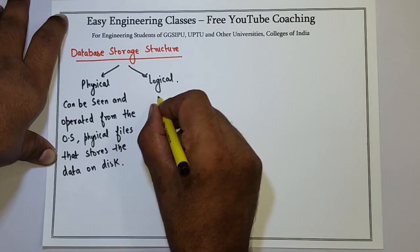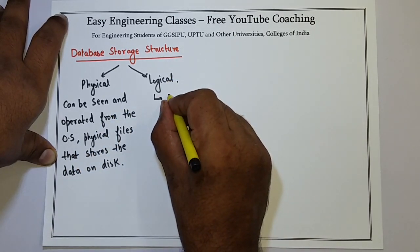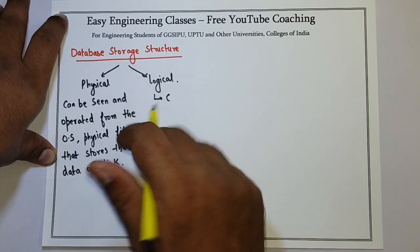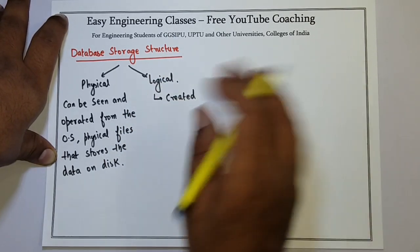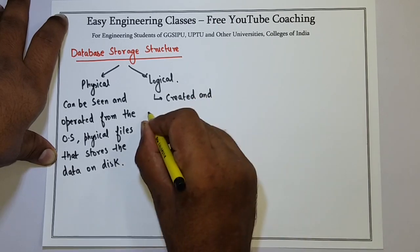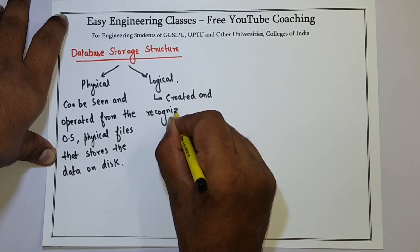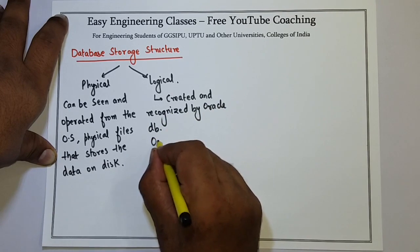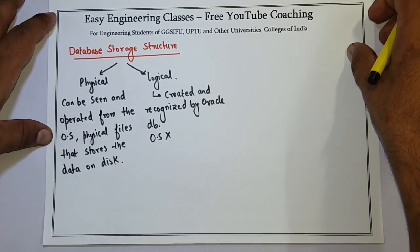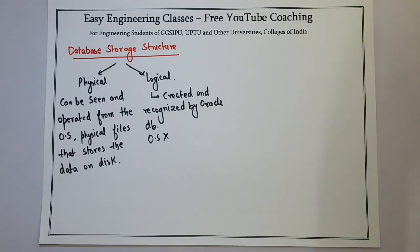The second type of database storage structure is logical. It is created and recognized by Oracle database. It is not related to the OS — it is an internal working of the Oracle database structure. The OS has no interaction with the logical database structure. Physical database structure deals with how and where the data needs to be stored, while logical database structure is related to the relationships between the data.